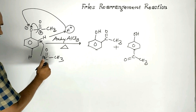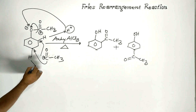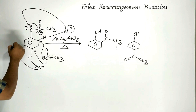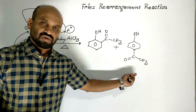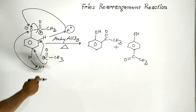When this electrophile attacks the para position, this hydrogen gets freed as a proton. This proton combines with this oxygen. As a consequence, parahydroxyacetophenone is formed.